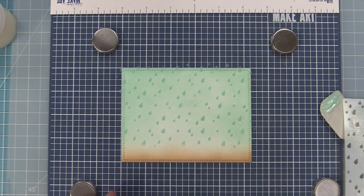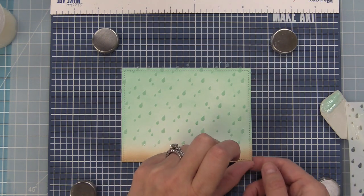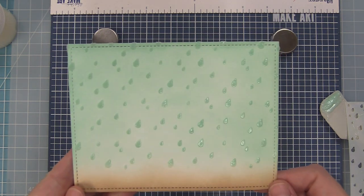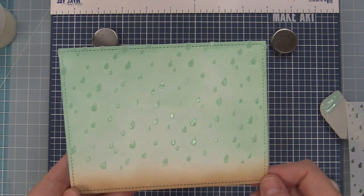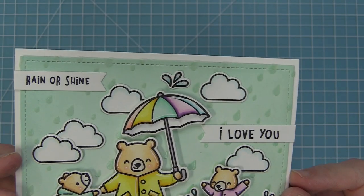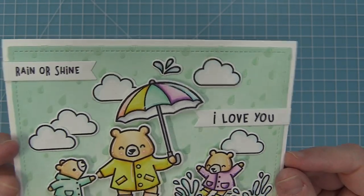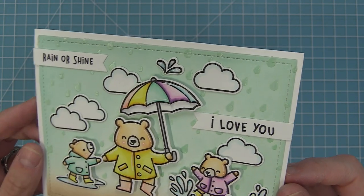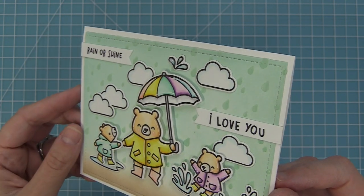It kind of almost like highlights the color that you've used underneath it and then when you lift it up you can see that beautiful shine. I took some of the bears from Berry Rainy Days and layered them into this cute scene and look how gorgeous this is. Those bears are so cute and having those shiny raindrops behind them kind of makes the whole card so special so I just love using this stencil paste.